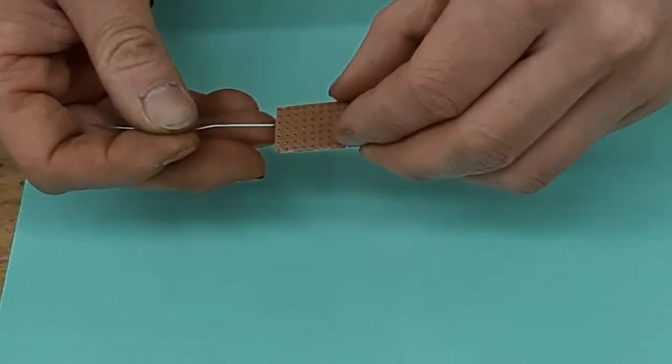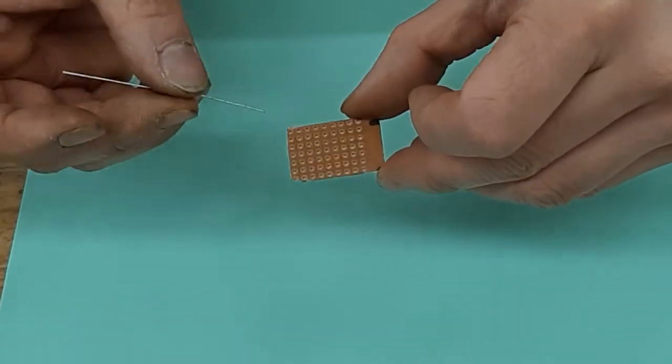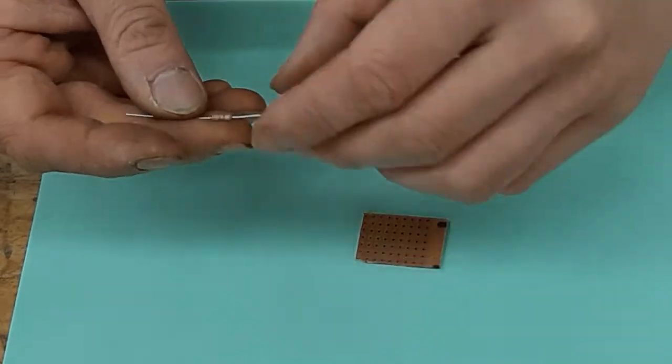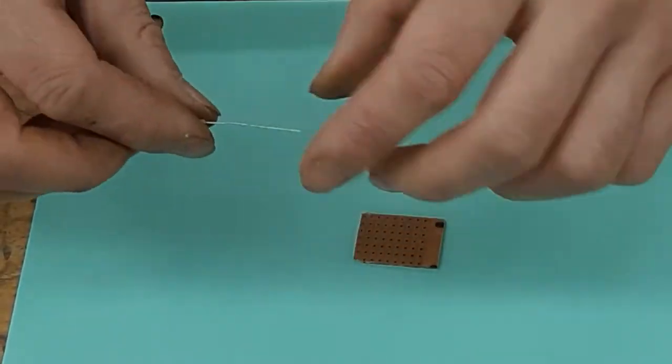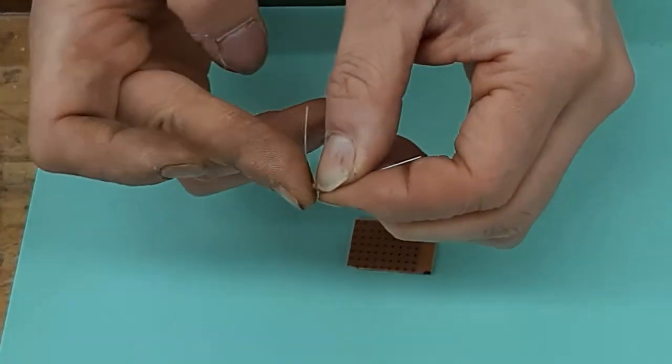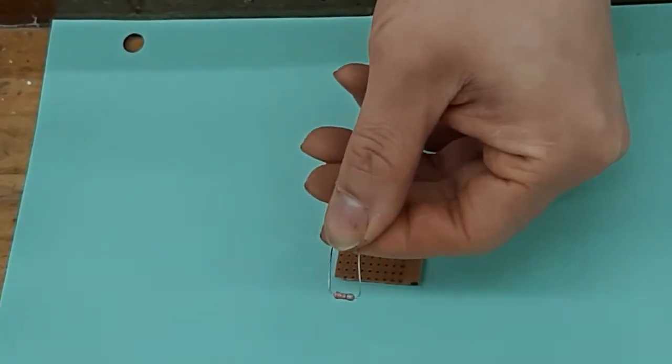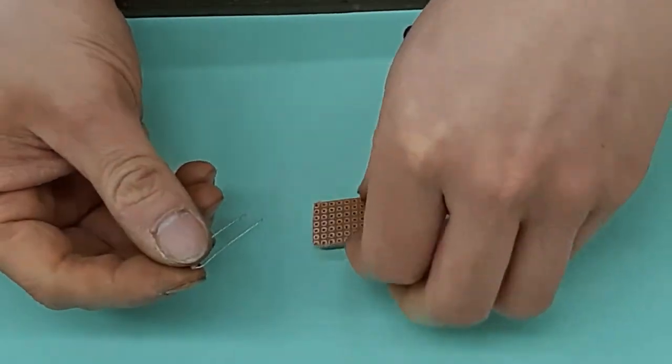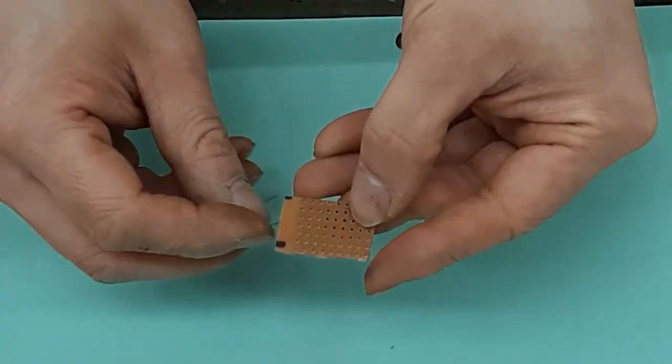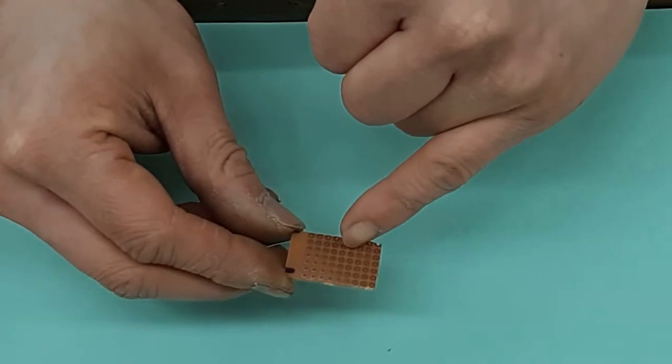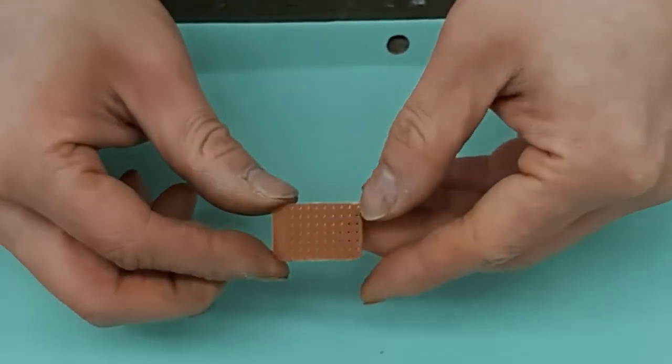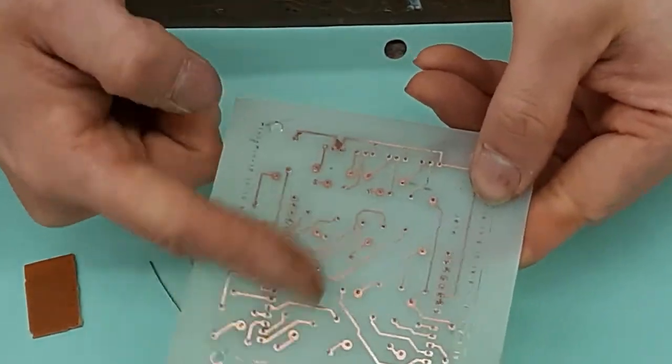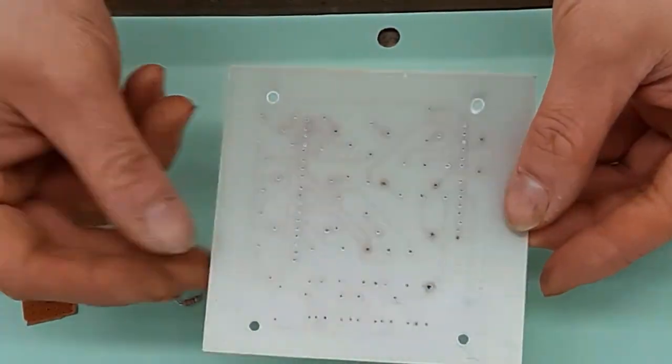So the very first thing to be aware is that when you are soldering, the solder always goes on the copper side. So when you take your component, you're going to bend it. So there's your component that's bent like this. And if you look on any circuit board, there's the copper side and there's the non-copper side. On the printed circuit board, here's the copper side, here's the non-copper side.